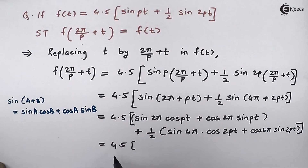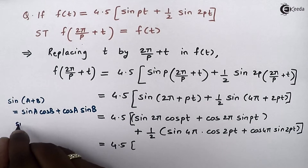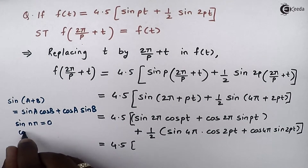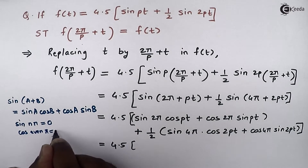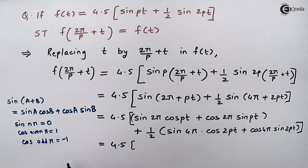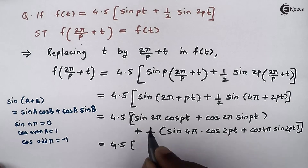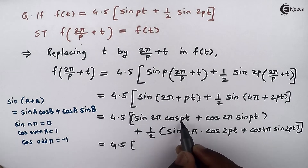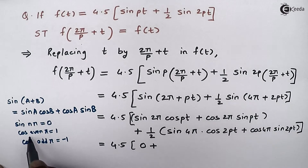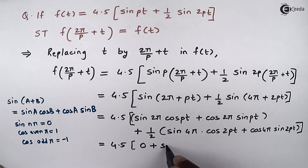Now finding the values: sin(2π) is 0, since sin(nπ) is always equal to 0. Whereas cos of even multiples of π is always 1, and cos of odd multiples of π is always minus 1. So sin(2π) = 0, making the first term 0. cos(2π) = 1 since 2 is even, so 1 times sin(pt) gives sin(pt).